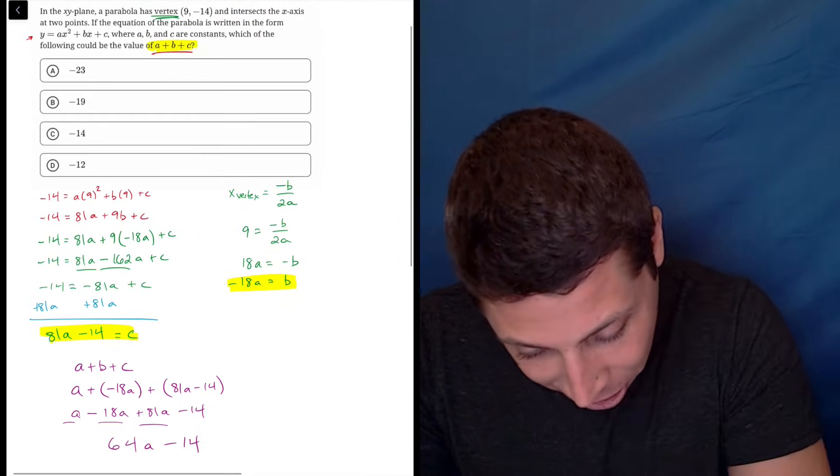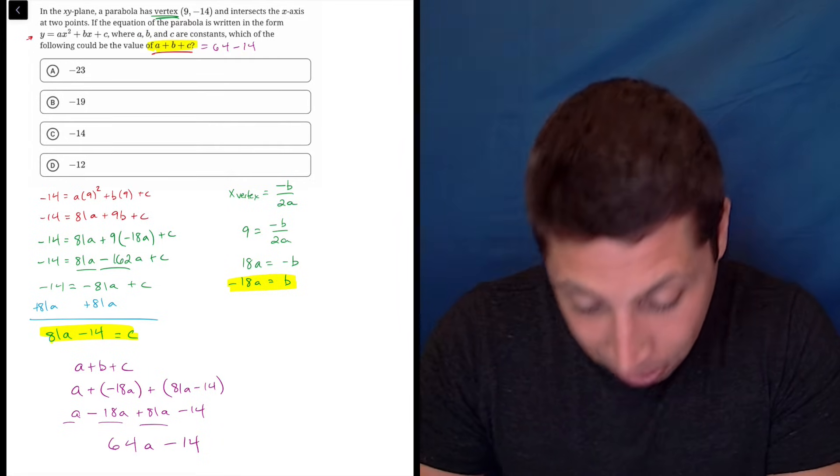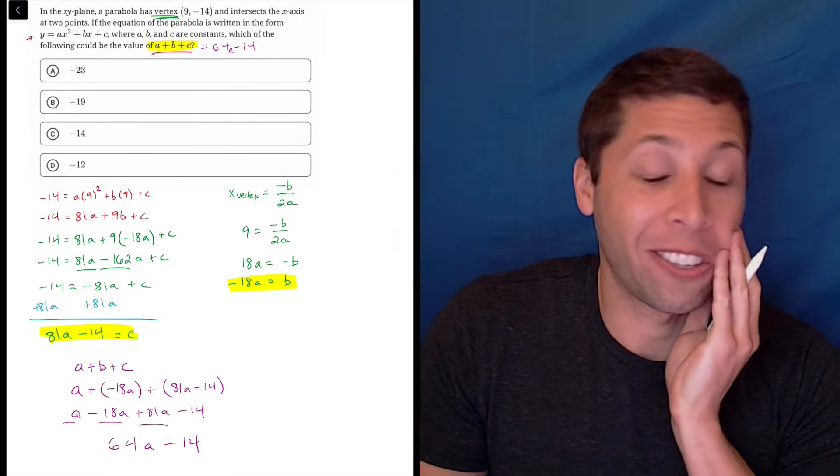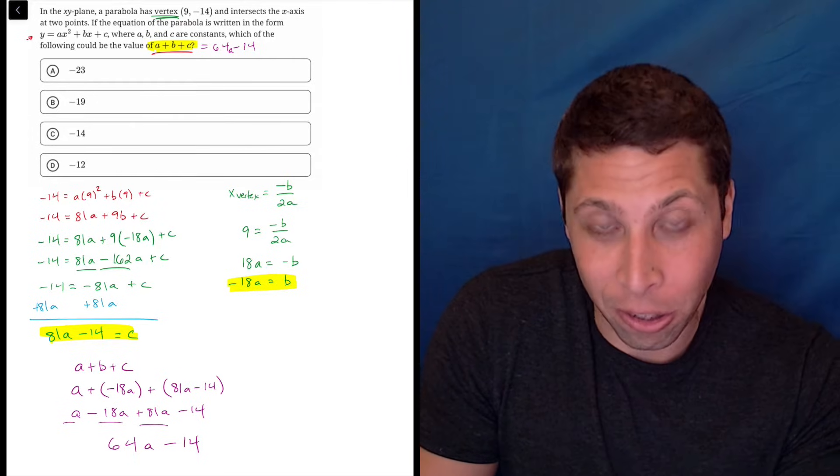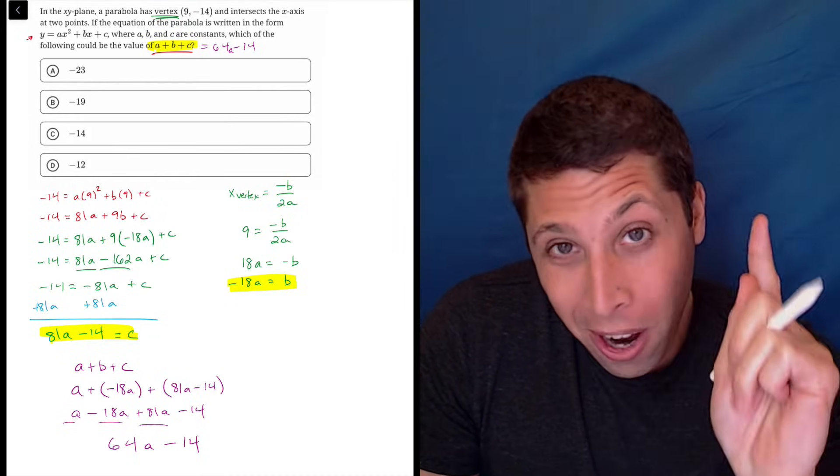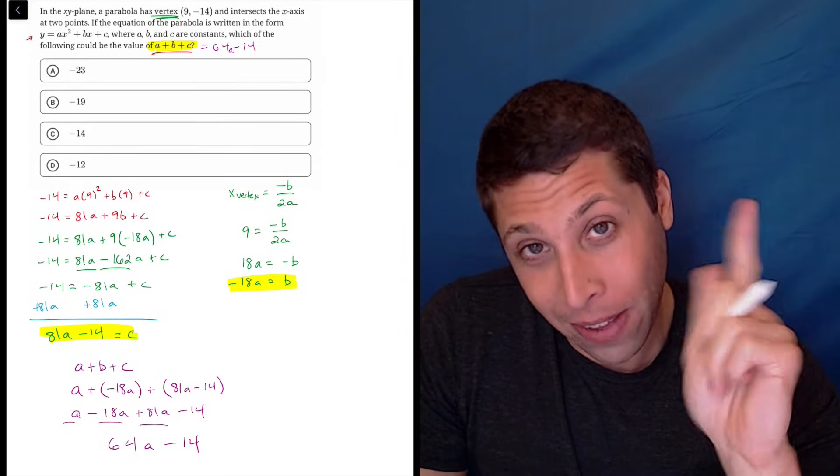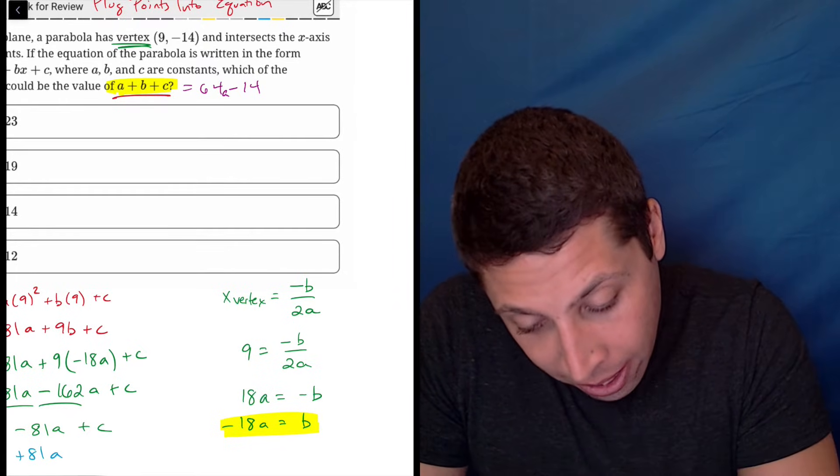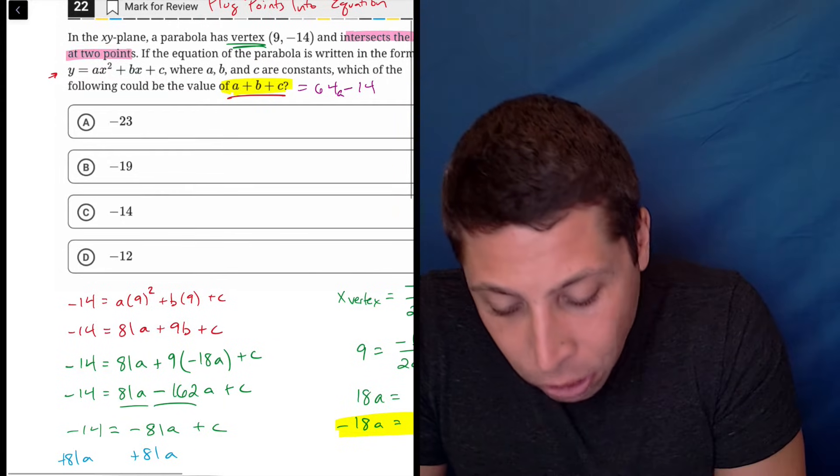So that's kind of like my answer, 64A minus 14. Let me put the A in there. That's just like rearranging the answer to have less stuff. But it's still not an answer, right? These are numbers. So what do I do? Well, there's one part of this that I didn't use. And it affects the A. I did not use that this thing intersects the x-axis at two points.